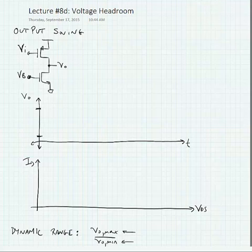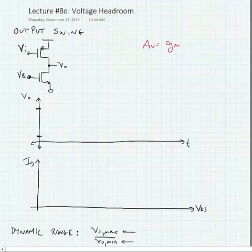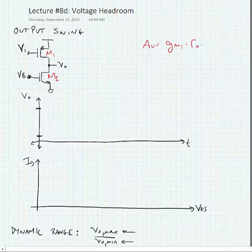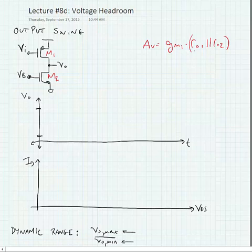We're going to look at the implications of output swing in this lecture. One thing we noted with this type of amplifier with an active load is that the gain is equal to GM of the PMOS transistor, in this case M1 and M2, so GM1 times R01 in parallel with R02. We noted that if we had cascoded this, we would have increased the gain very significantly.